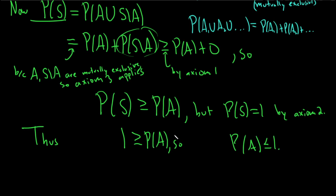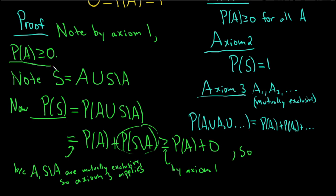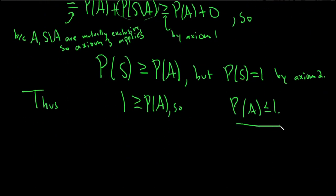So we've shown two things. We have shown that the probability of A is greater than or equal to 0, and that it's less than or equal to 1. So thus, that's the same thing as saying, it's less than or equal to 1, and greater than or equal to 0. And that completes our proof.